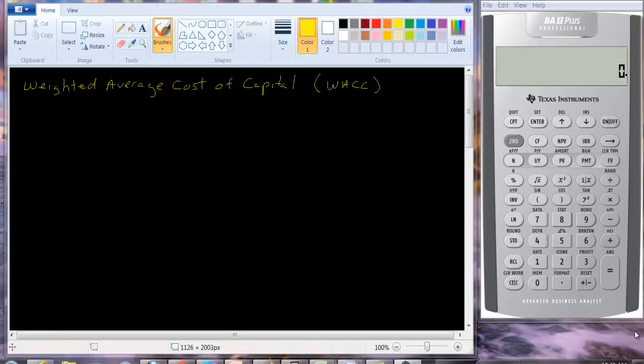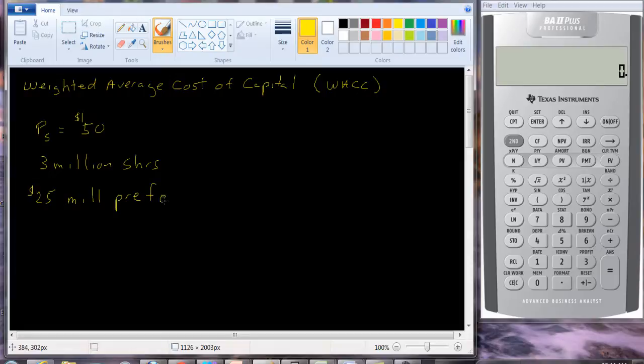So the best way to see this is through an example. So let's assume that a company has a stock price, so the price of the stock is equal to $50. And let's assume that there are 3 million shares outstanding.